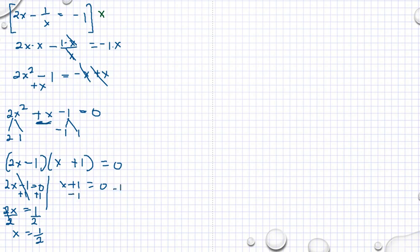Subtracting both sides of the equation by 1 from x plus 1 equals 0, our x sub 2 is equal to negative 1.